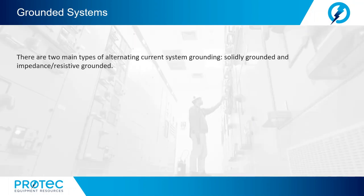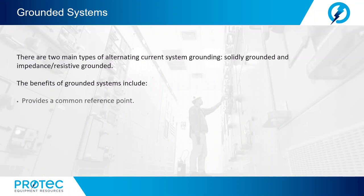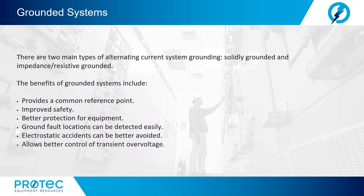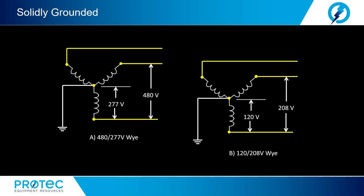There are two main types of AC system grounding: solidly grounded systems and impedance or resistive grounded systems. The benefits of grounded systems include providing a common reference point, improved safety, better protection for equipment, relatively easy ground fault location detection, better avoidance of electrostatic accidents, and better control of transient overvoltage.